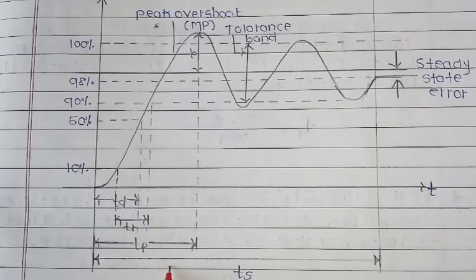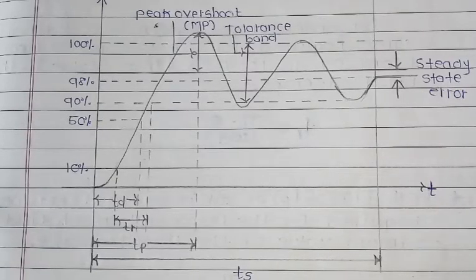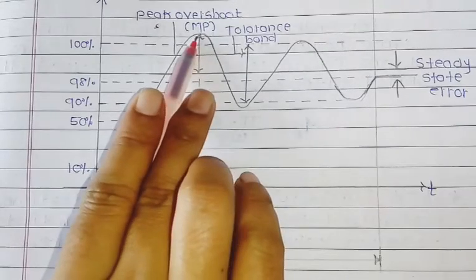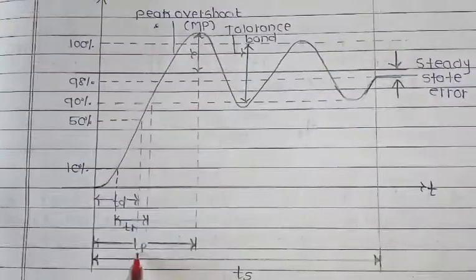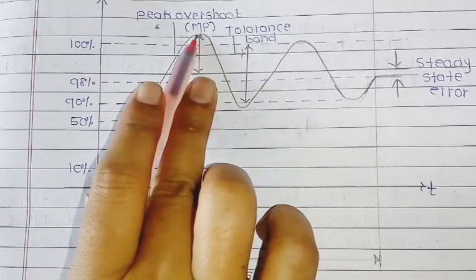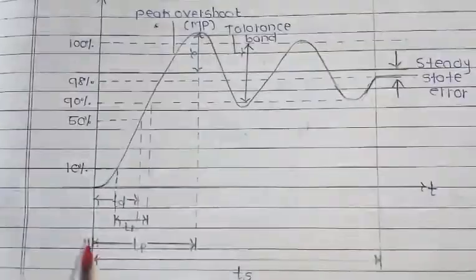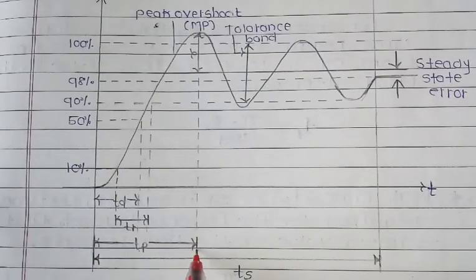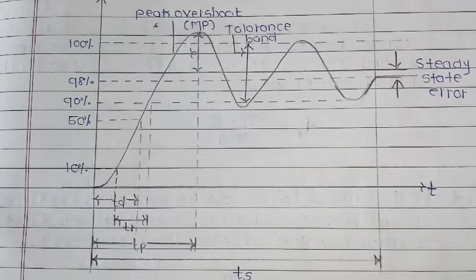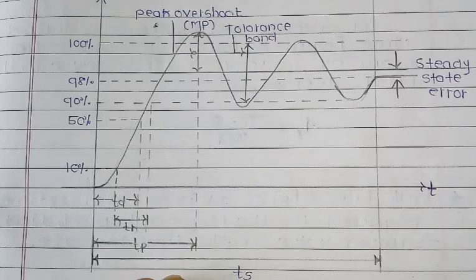Next parameter is peak time, that is Tp. Peak time is defined as the time required for the response to reach the first maximum value, or peak value, or peak overshoot of the time response. When our response reaches the maximum value, that is the peak overshoot — that is the peak time. Its formula is: Tp equals pi upon omega-d.